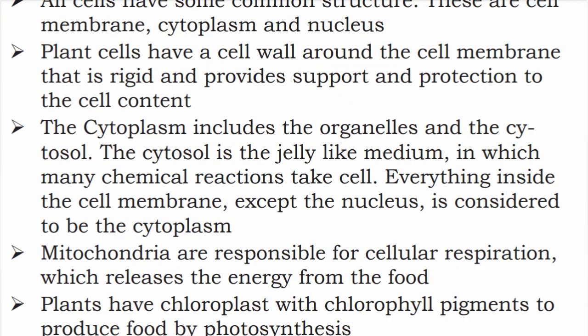Plant cells have a cell wall around the cell membrane that is rigid and provides support and protection to the cell contents. In a plant cell, the cell wall is outside the cell membrane. So the cell wall is the supporter and protector of the plant cell.